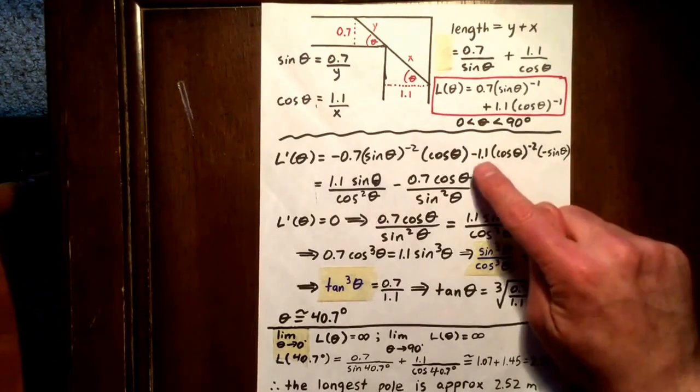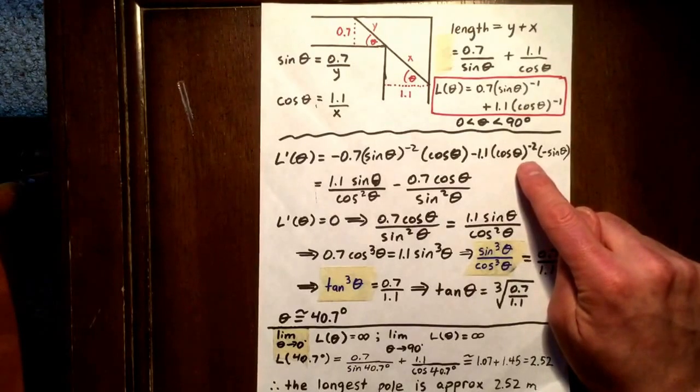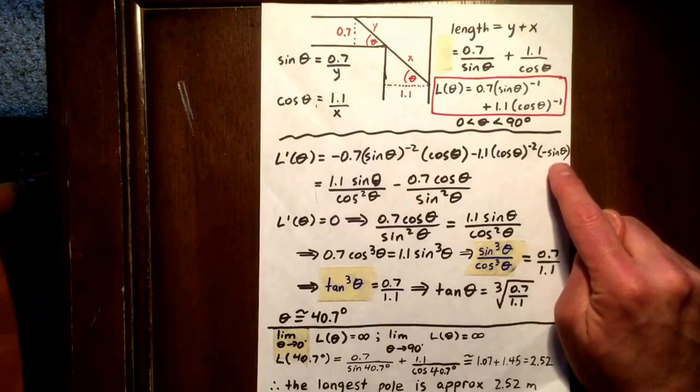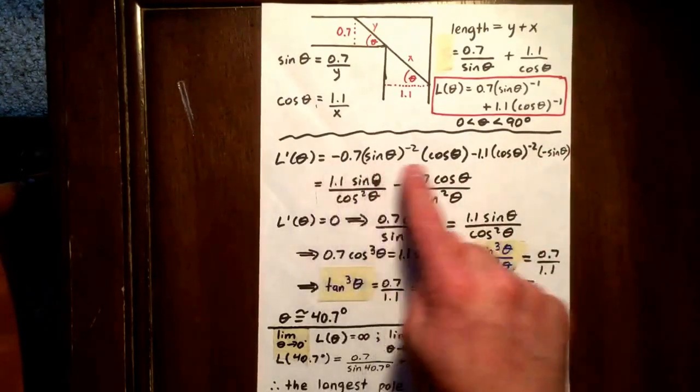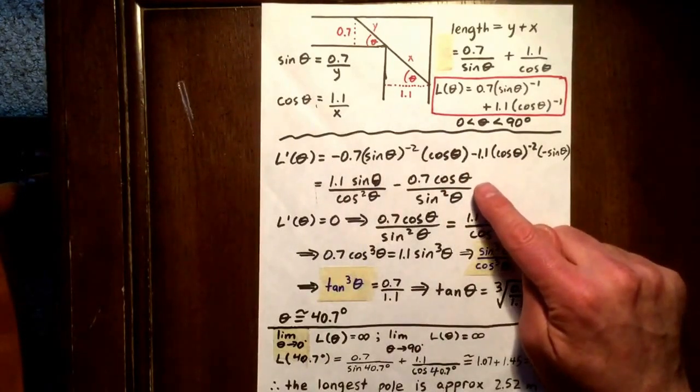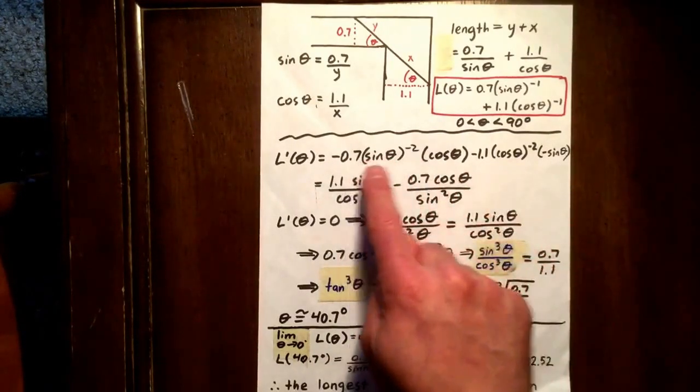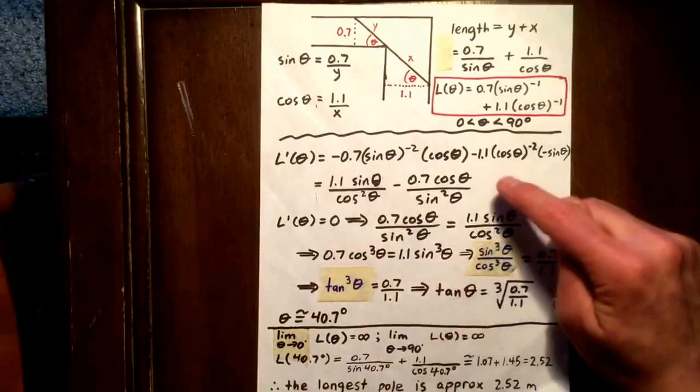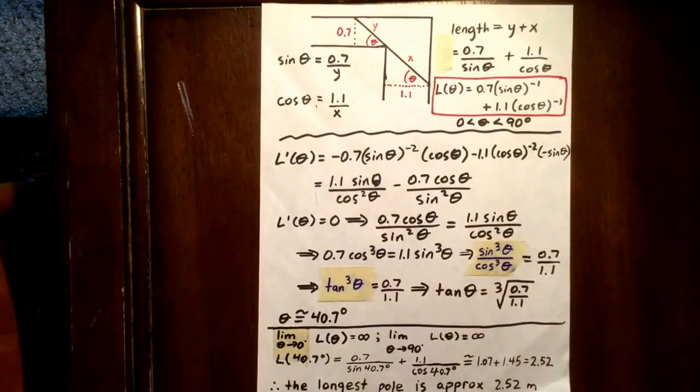So we have positive 1.1 cos theta to the negative 2 sine theta minus 0.7 cos theta over sine squared theta. Or in other words, cos theta times sine theta to the negative 2. We get to this expression here.